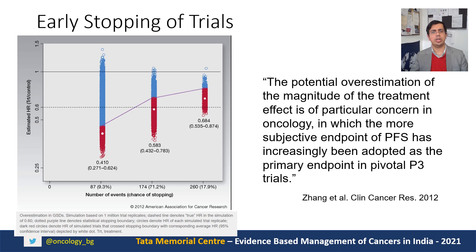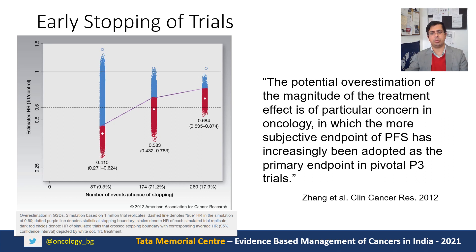Let's talk about early stopping of trials, which we have started to see more and more frequently in recent years — trials stopped early due to impressive benefits crossing the stopping boundary. We know from several analyses that the sooner a trial is stopped, the greater the potential overestimation of treatment effects. As seen in this graph, the sooner the trial is stopped, the more impressive the hazard ratio looks. This is especially problematic when the trial is stopped based on subjective endpoints like progression-free survival, which has more potential for bias.